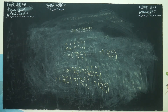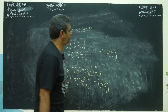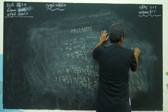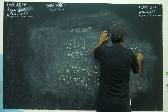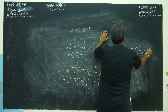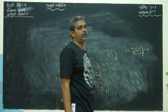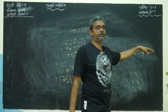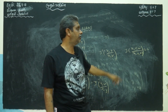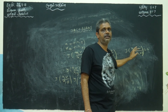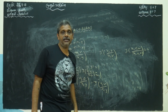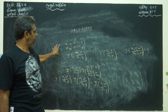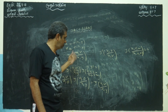Functional dependence: if the Jacobian of (u,v,w) with respect to (x,y,z) equals zero, then u, v, w are functionally dependent — meaning u can be written in terms of v and w, or v in terms of u and w, and so on. You can find one relation among them. This is called functional dependence, and problems will ask you to find that relation. These are the basic things about Jacobians, and now we will do problems.